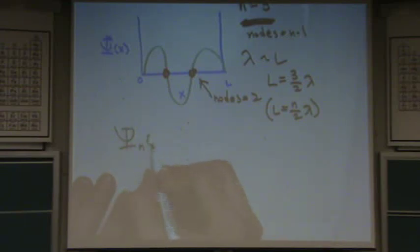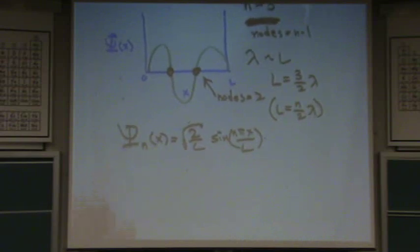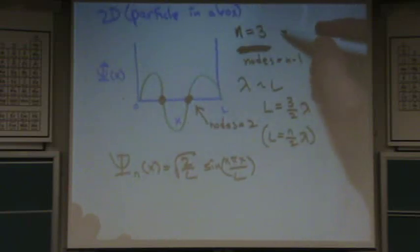The wave function for any n of x is square root of two over L sine n pi x over L. So, you can see it looks like a sine wave. The square root of two over L, that's the amplitude. And then you have that argument in the sine function. So, in our case, because n equals three,